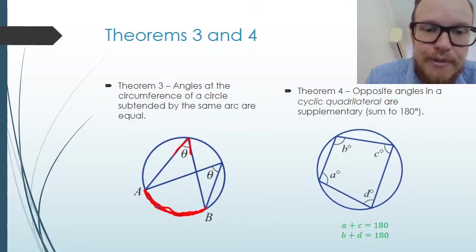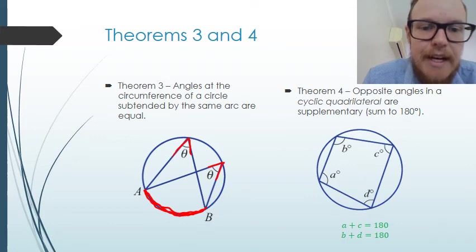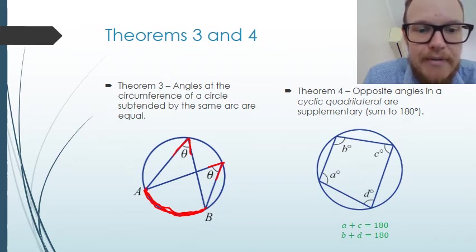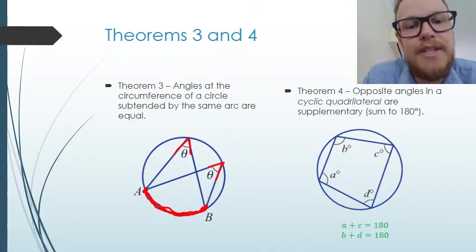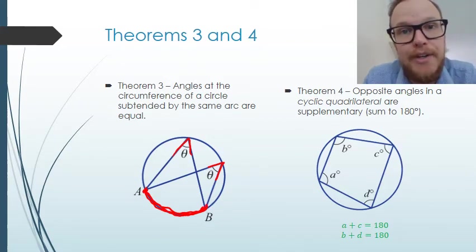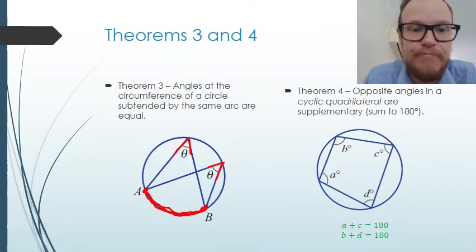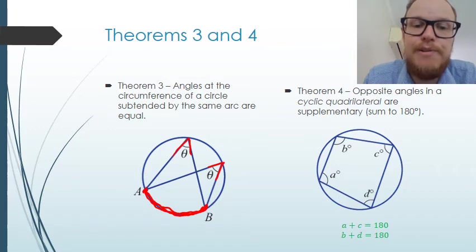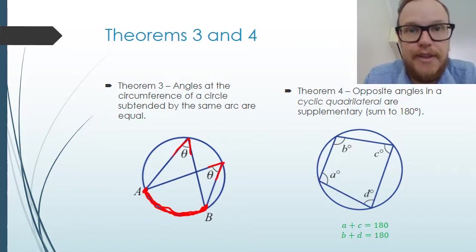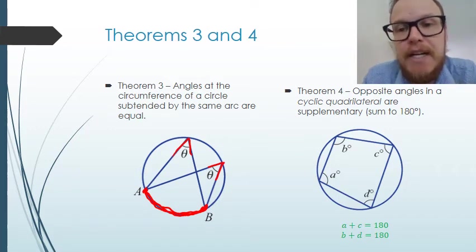Both angles are subtended by the same arc AB — their end points are at the same arc, and those two angles are equal. That's theorem three.